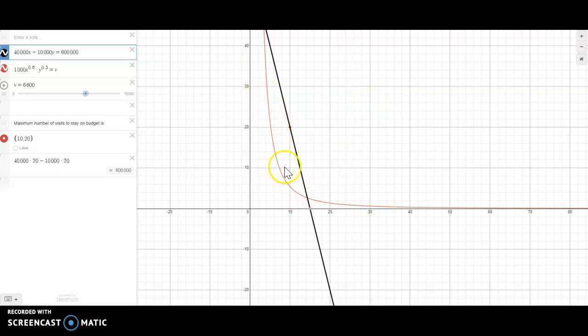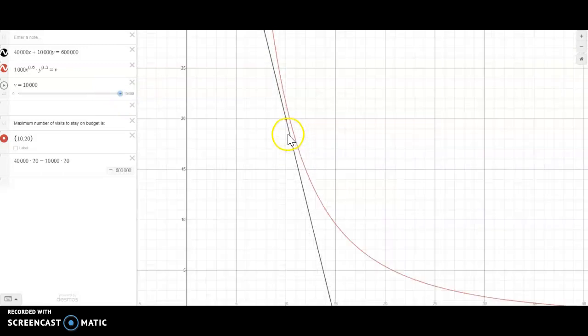So anywhere along this curve to the left of that line, we're under budget. So we can continue pushing that out until we find a point where the number of doctors and nurses - you can see our visits are going up - where we can maximize our number of doctors and nurses. And you can see that now, if I were to zoom in on this, I am on points that are to the right of my constraint function, which means that any point along this red curve would require a budget that is higher than the budget that we are allocated.